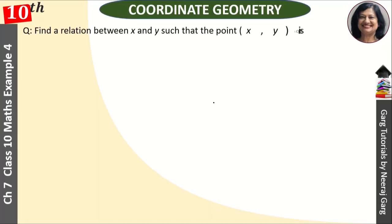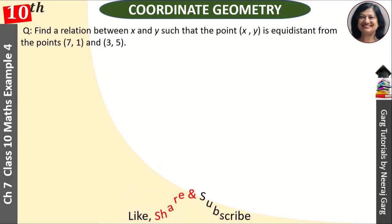Hi, this is Neeraz Kirk and you are watching Class 10th, Chapter 7, Coordinate Geometry. Find a relation between x and y such that point (x, y) is equidistant from the points (7, 1) and (3, 5).